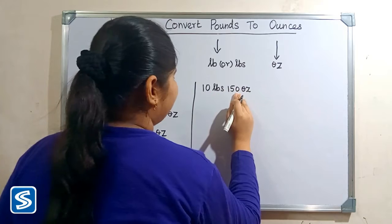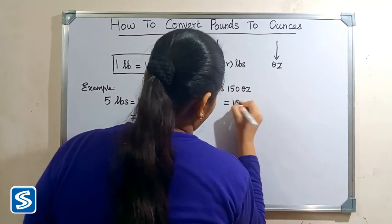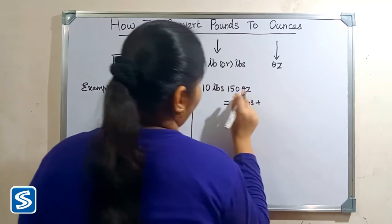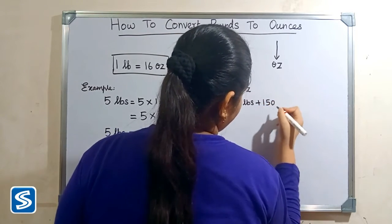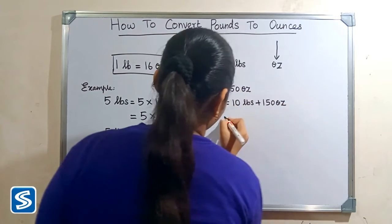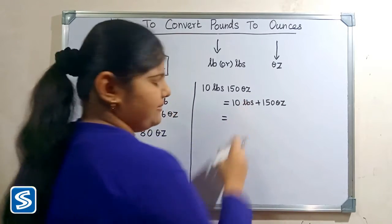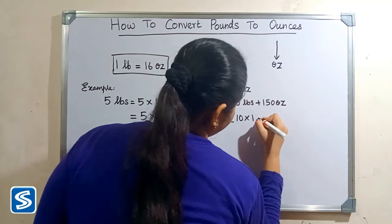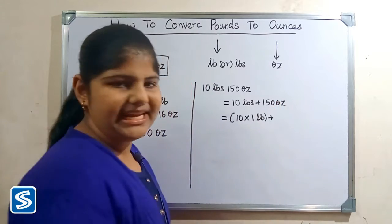10 pounds 150 ounces can be written as 10 pounds can be written as 10 multiply 1 pound plus 150 ounces.